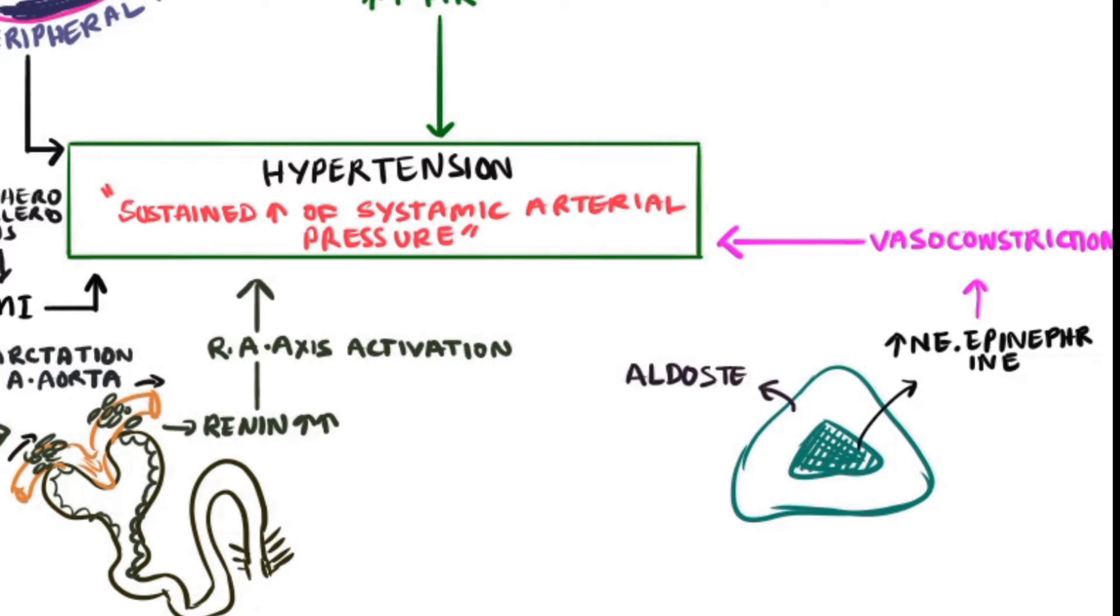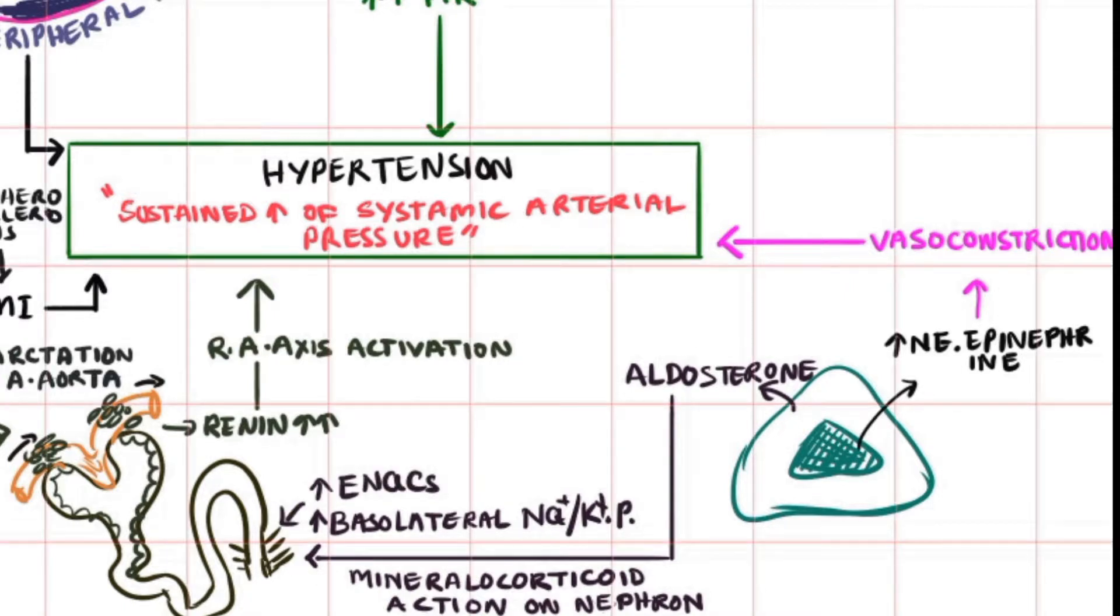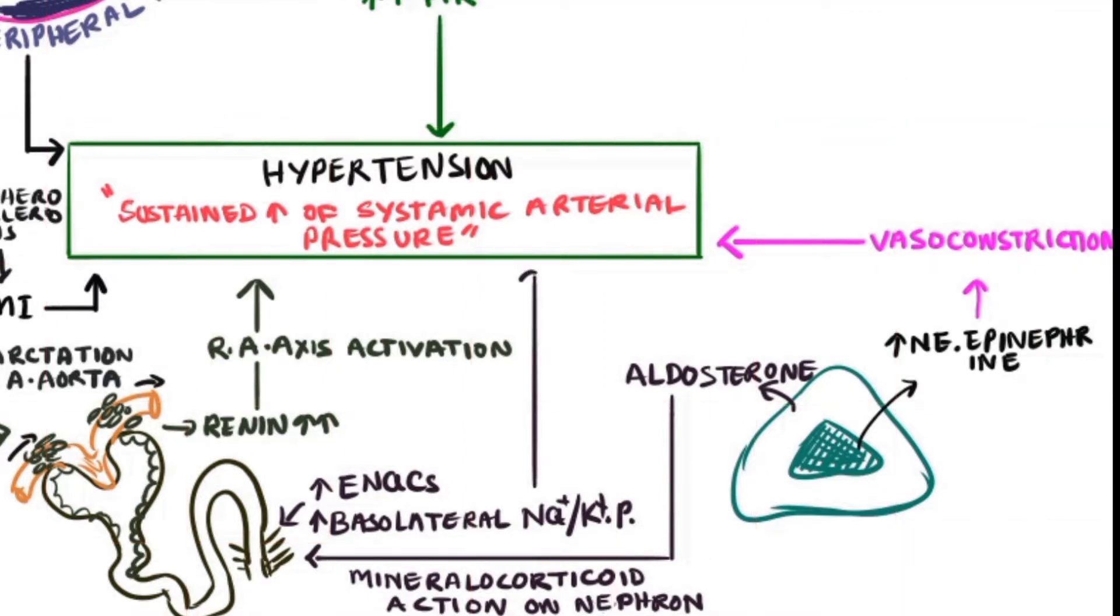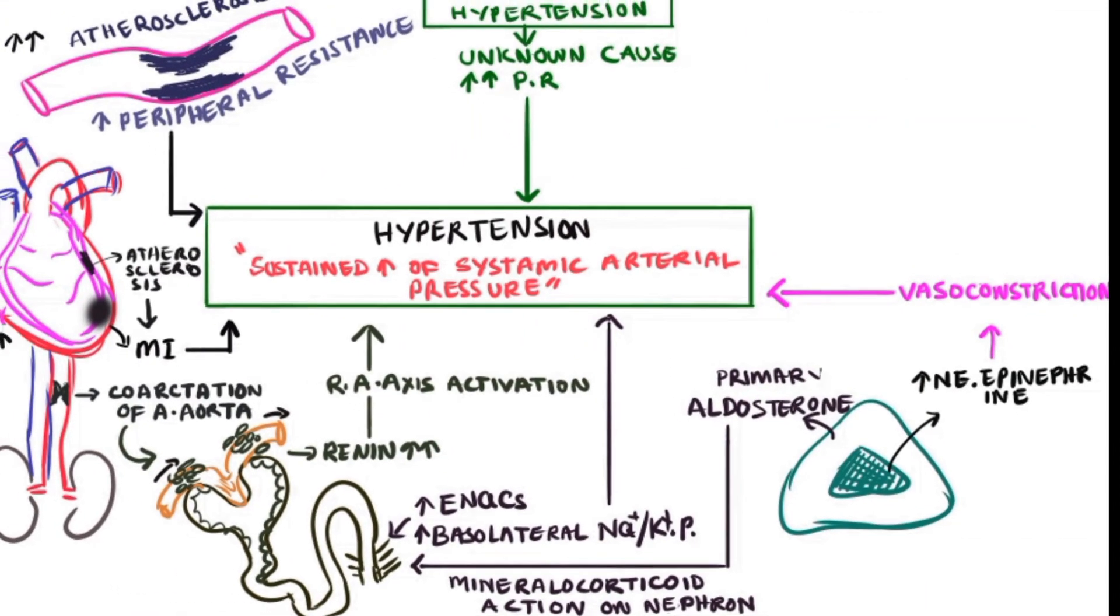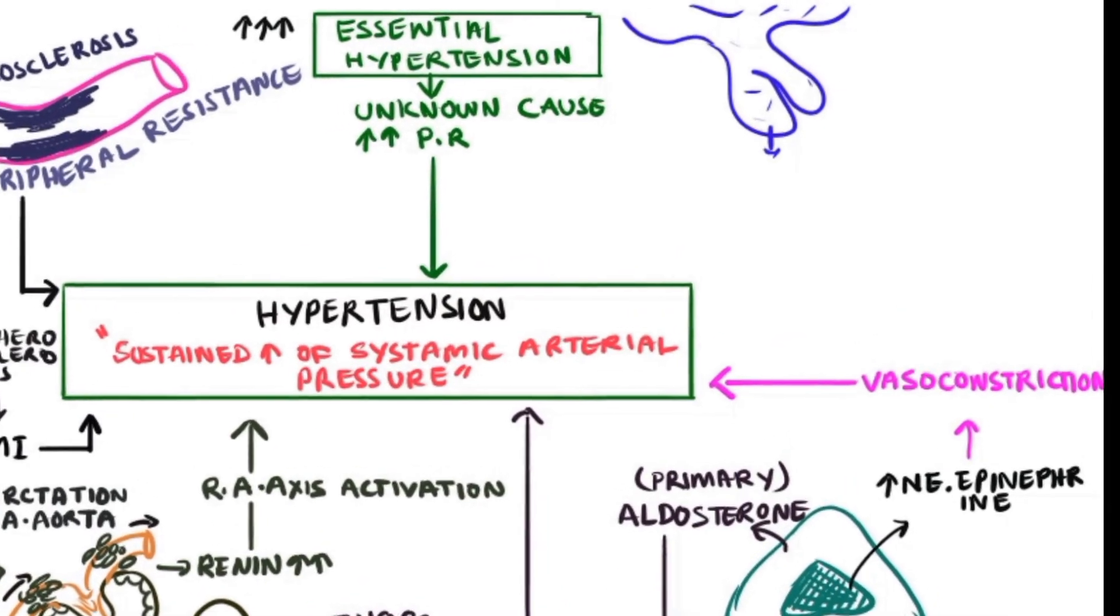Any abnormal secretion of aldosterone by itself from the zona glomerulosa leads to excess mineralocorticoid activity on the collecting ducts of the nephron, increasing the basolateral sodium-potassium pump and epithelial sodium channels. This leads to excess retention of sodium, further causing hypertension due to excess sodium retention. This is primary aldosterone secretion or activity.